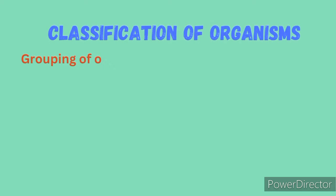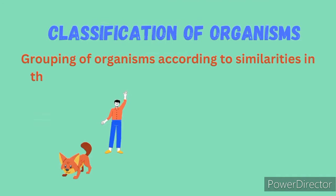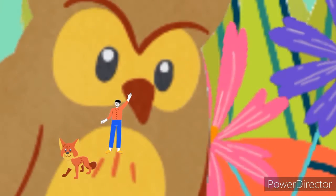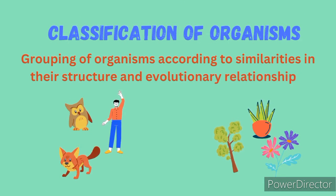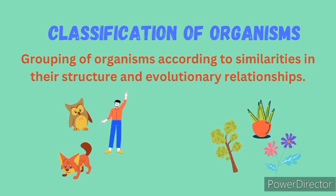Classification can be defined as the grouping of organisms according to two things: number 1, similarities in their structure, and number 2, their evolutionary relationships.